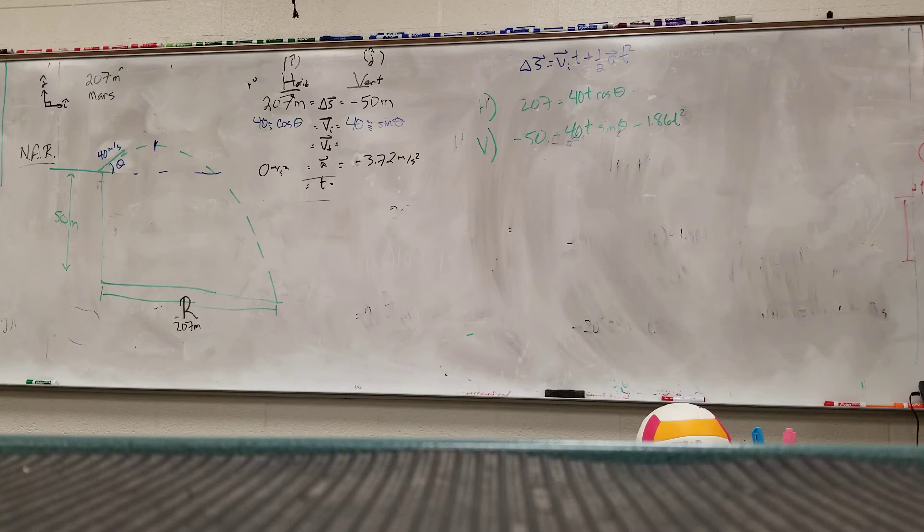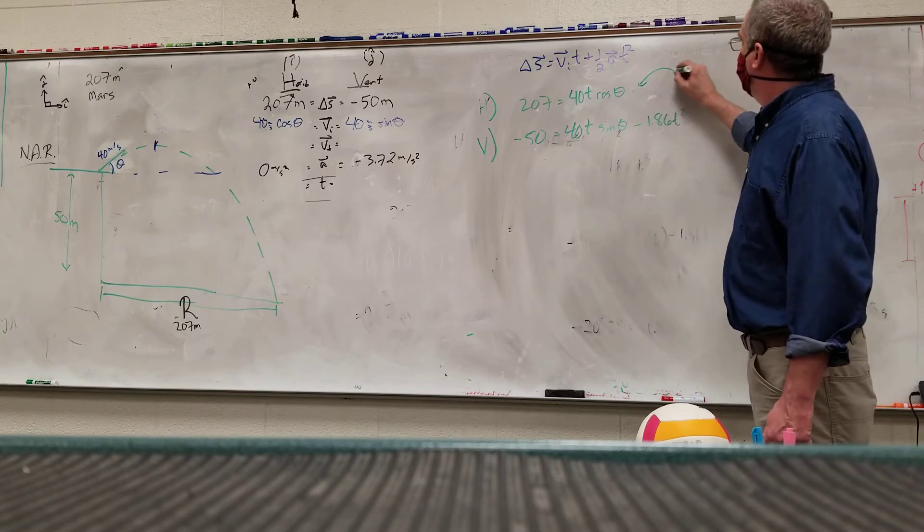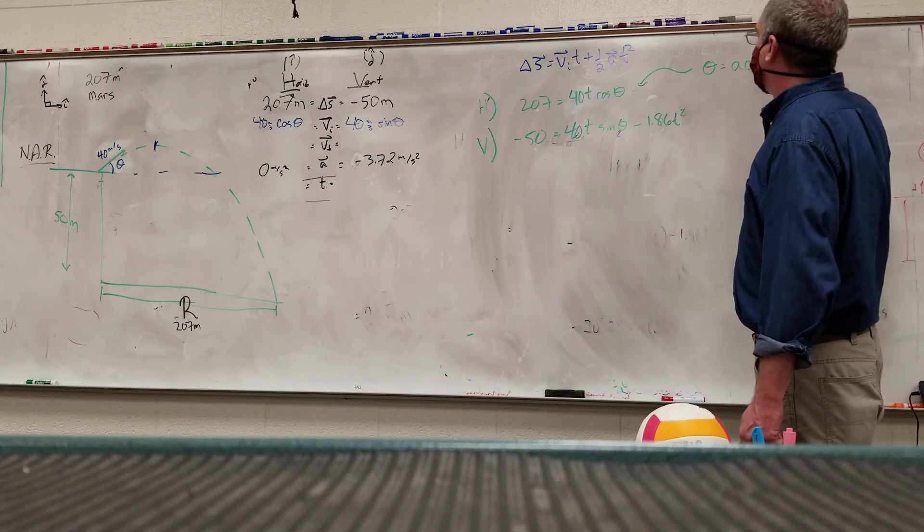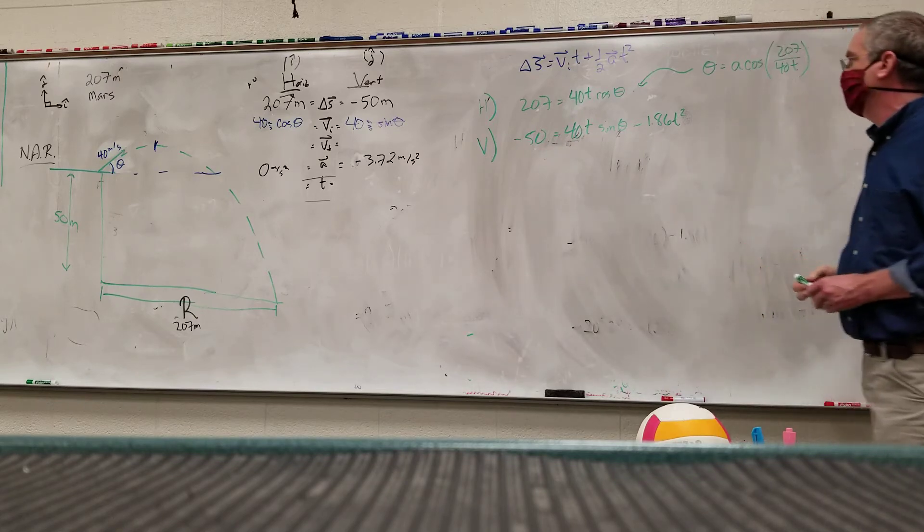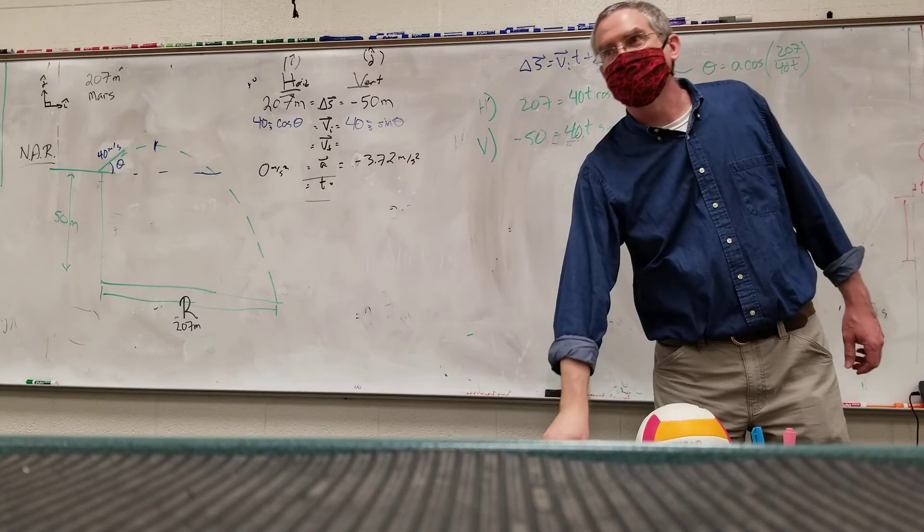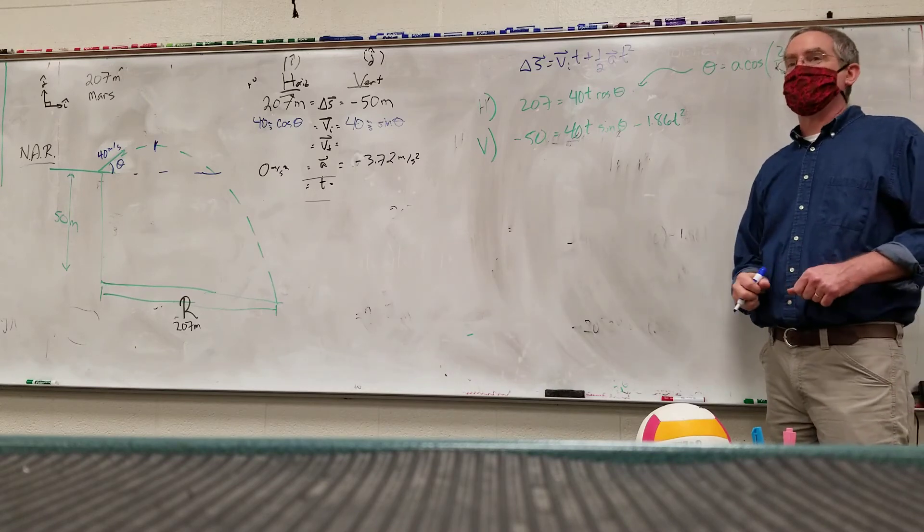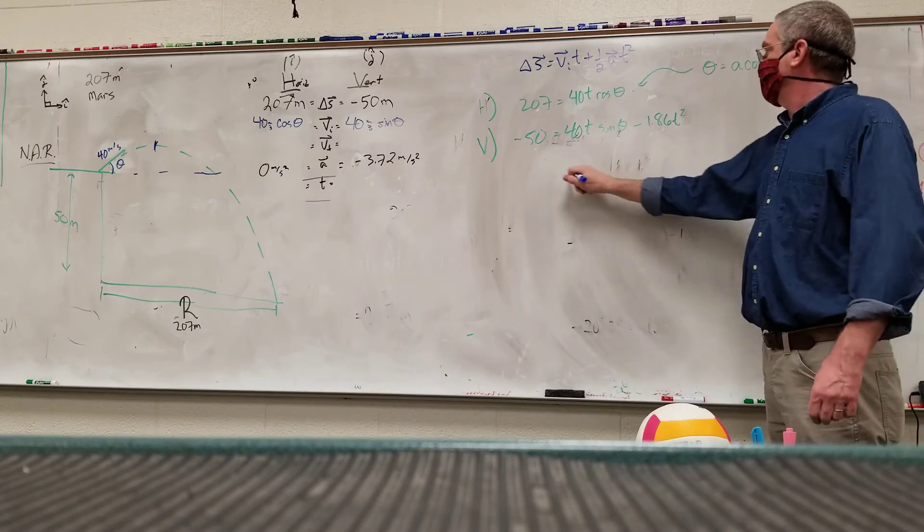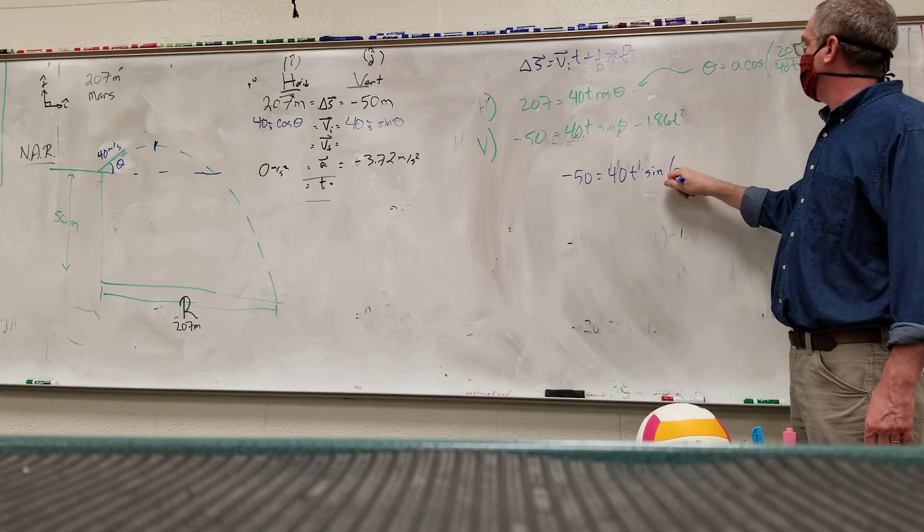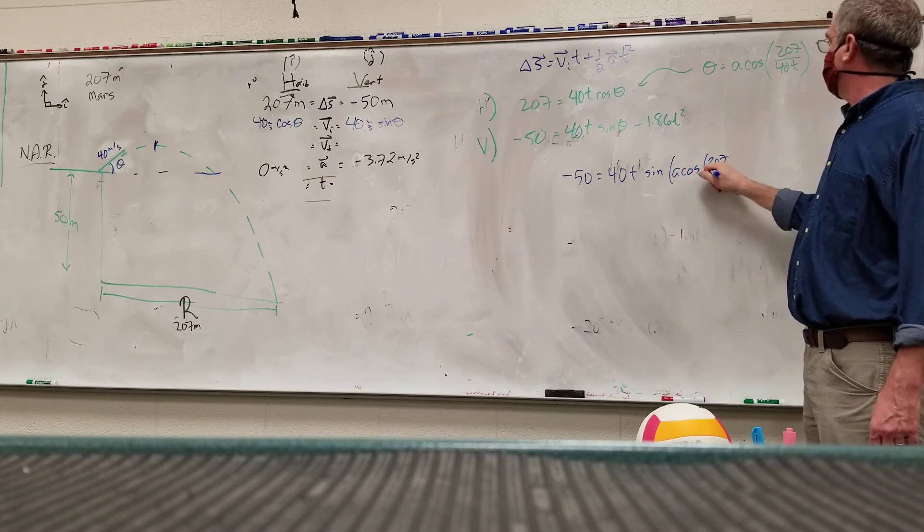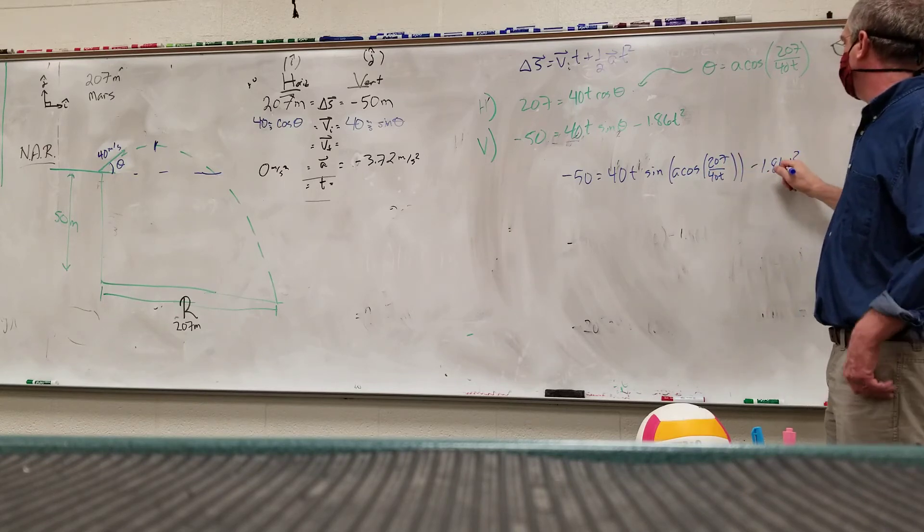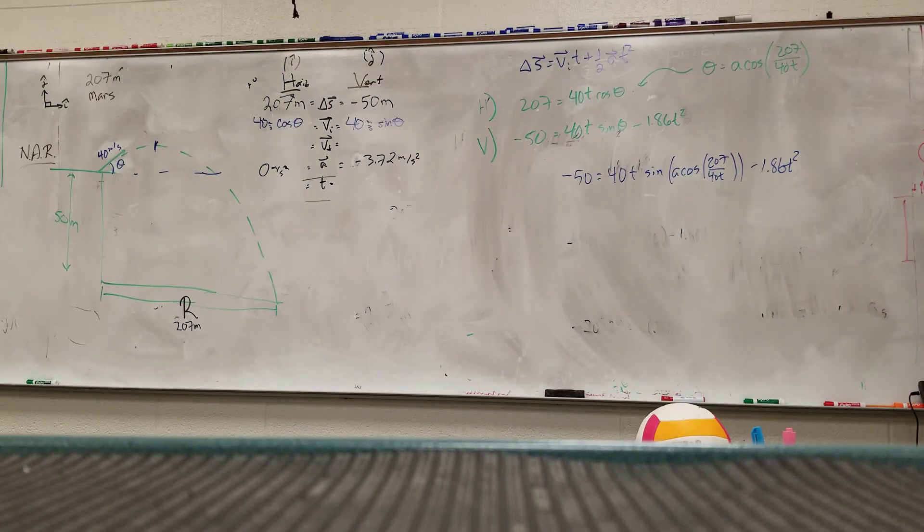And which equation? So theta is equal to the arc cosine of 207 over 40t. So we're going to do a sine of an arc cosine. Let's see where this gets us. If you don't like this way, you should have spoken up before loss. So I have negative 50 equals 40t sine of arc cosine of 207 over 40t minus 1.86t squared. So what's the sine of an arc cosine?